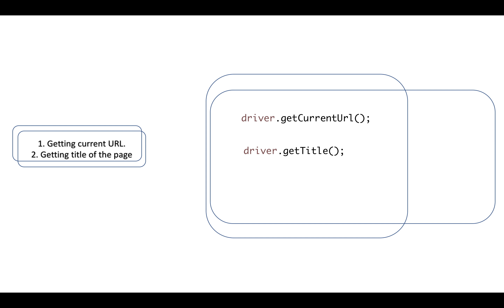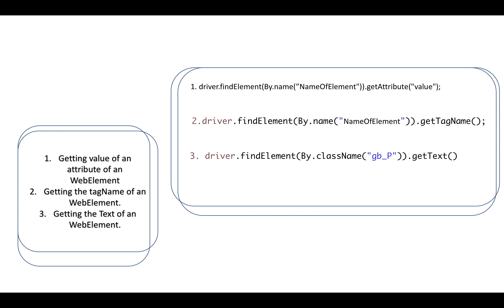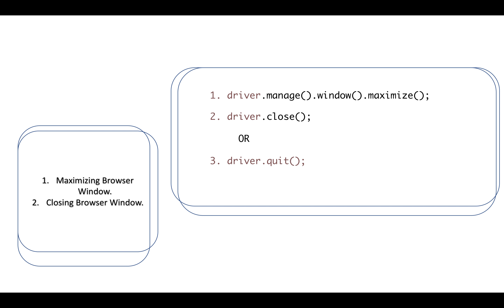To get the position of the window, use the getPosition() method. To get the current URL, use driver.getCurrentUrl(). To get the title of the page, use driver.getTitle(). To get the value of an attribute of a web element, use driver.findElement().getAttribute() with the attribute value. To get the tag name of an element, use getTagName(). To get the text of an element, use getText().